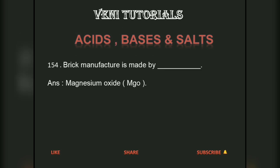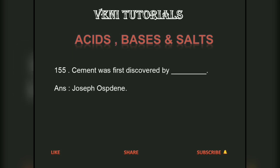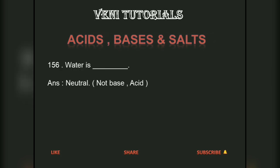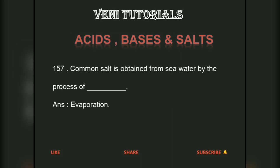Brick manufacture is made by dash — answer: magnesium oxide, chemical formula MgO. Cement was first discovered by dash — answer: Joseph Aspdin. Water is dash — answer: neutral. Water is not a base and also not an acid.